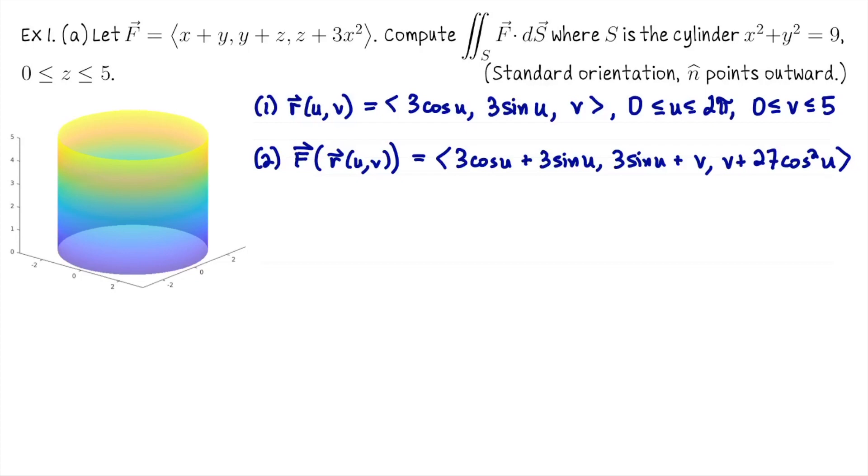F of R(u,v), we just plug that into our vector field. So it's ⟨3cos u + 3sin u, 3sin u + v, v + 27cos²u⟩. Then we need R_u and R_v. For R_u, it's ⟨-3sin u, 3cos u, 0⟩. R_v is even better, it's ⟨0, 0, 1⟩.